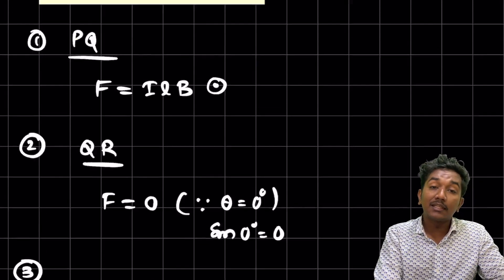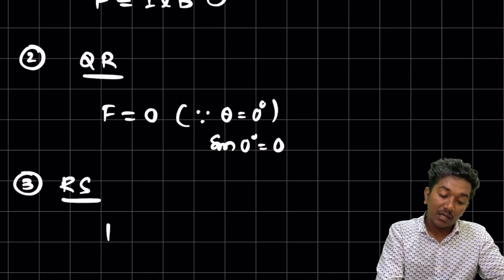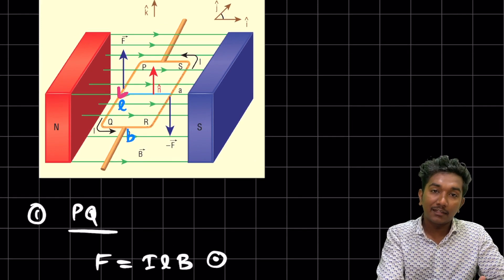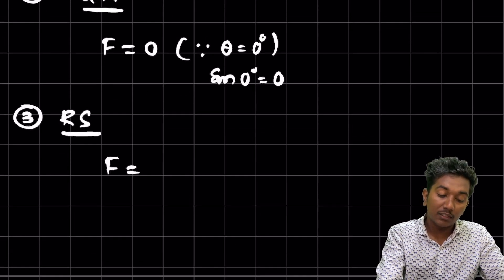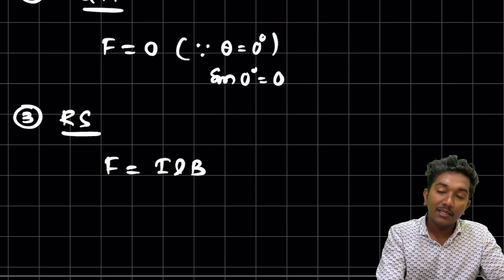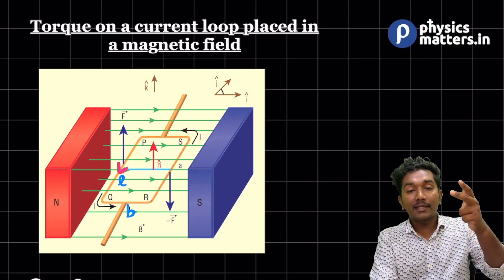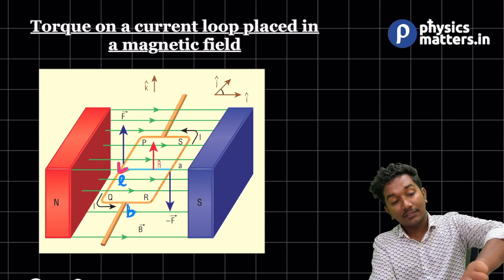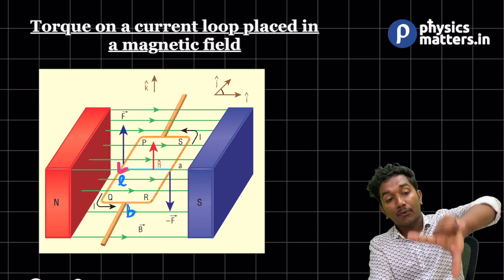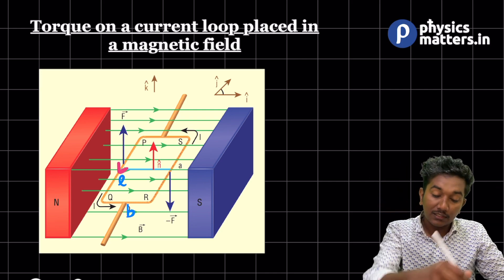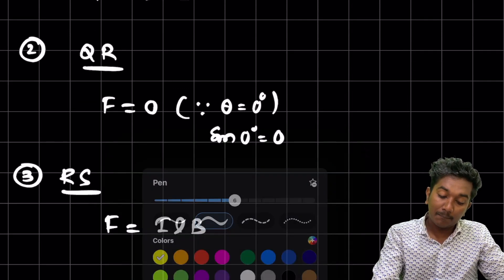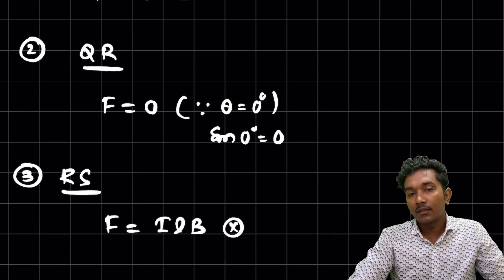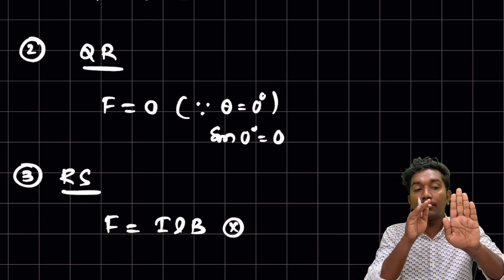Third conductor: RS. Here, the magnetic field is perpendicular, so F = ILB. But what is the direction? Applying Fleming's left-hand rule: the magnetic field is in that direction, current is in this direction, so the thumb points downward. The force on RS is downward — into the page (−z direction).